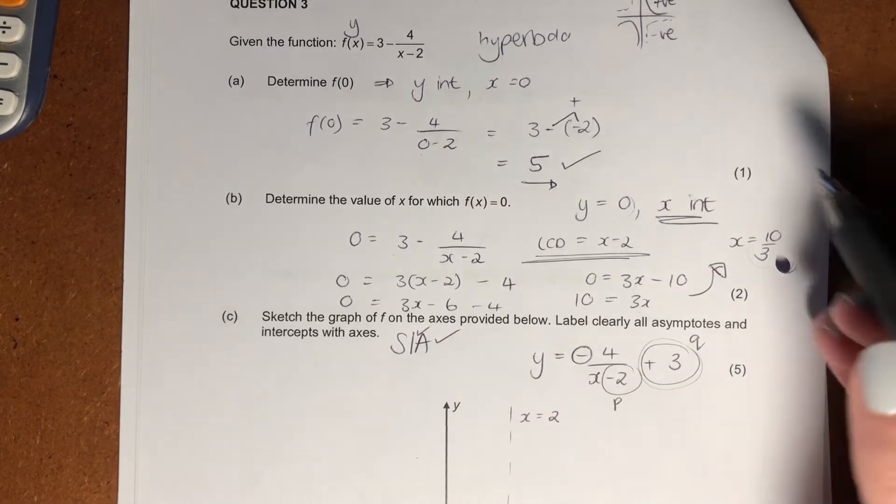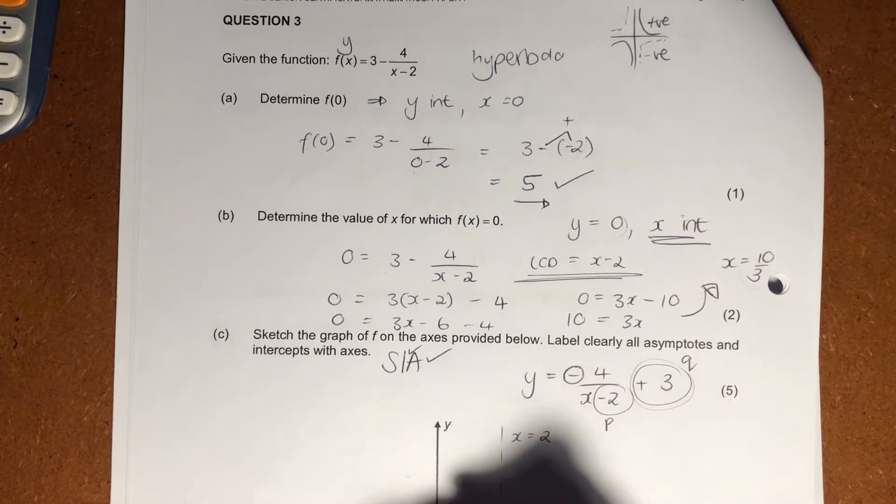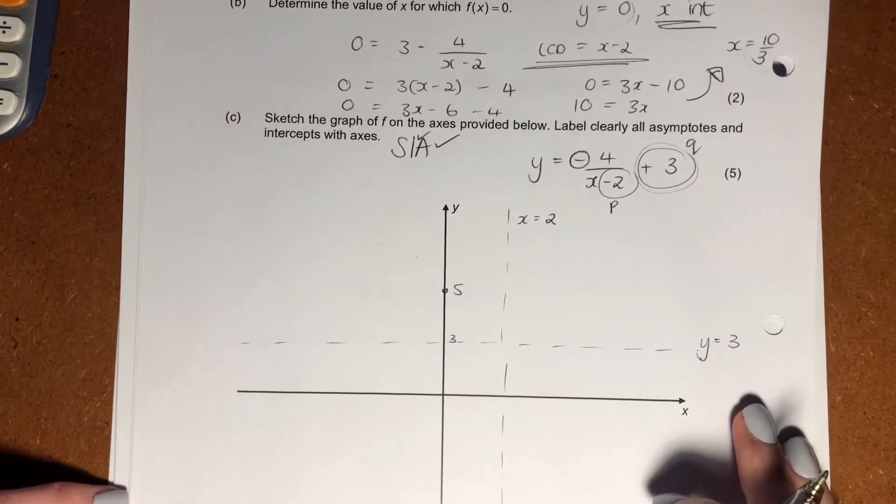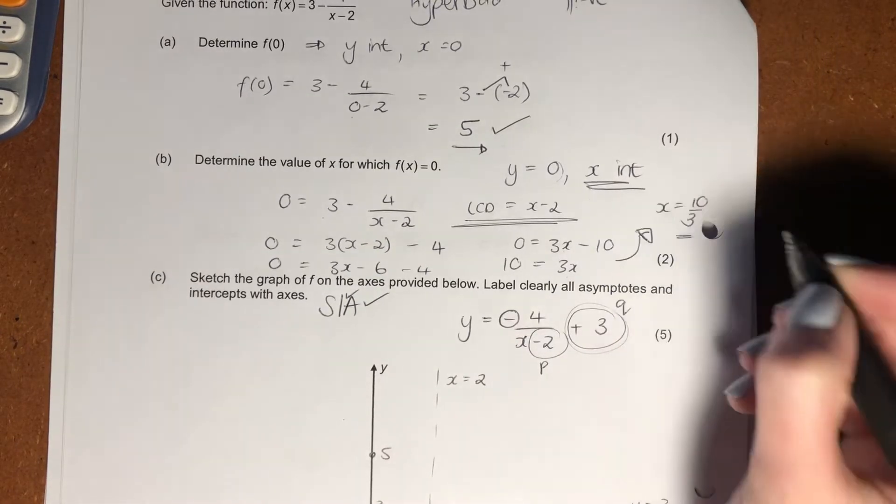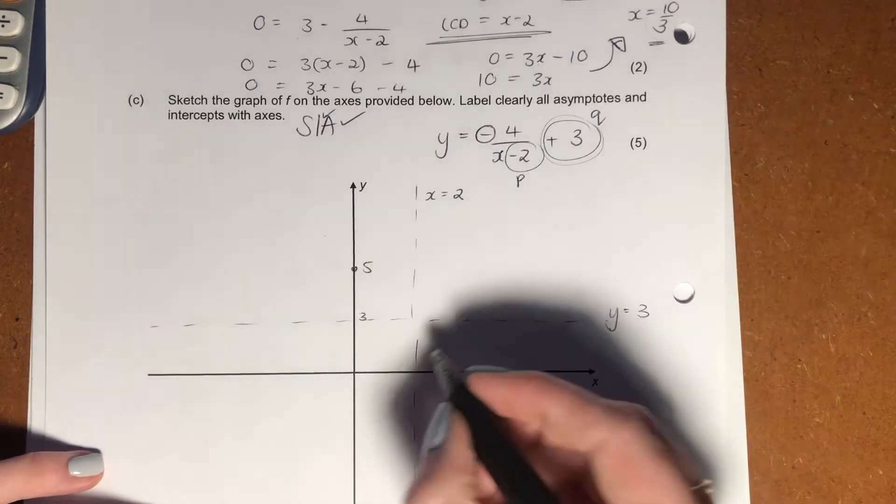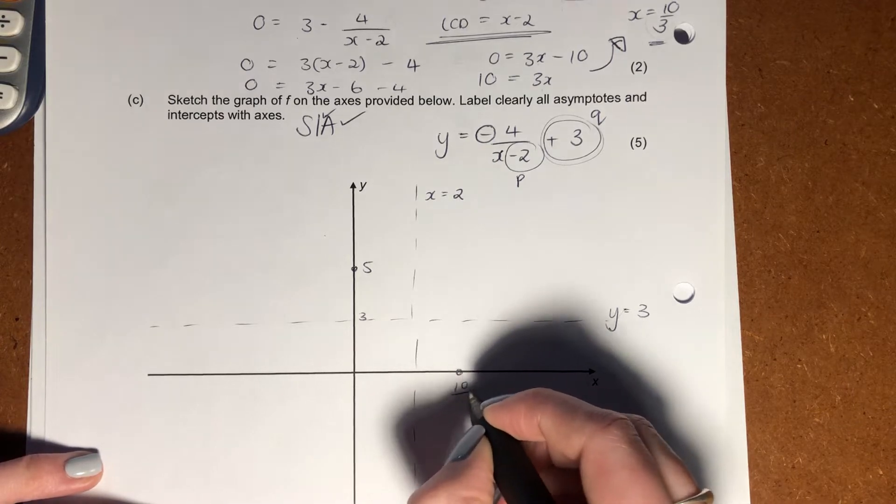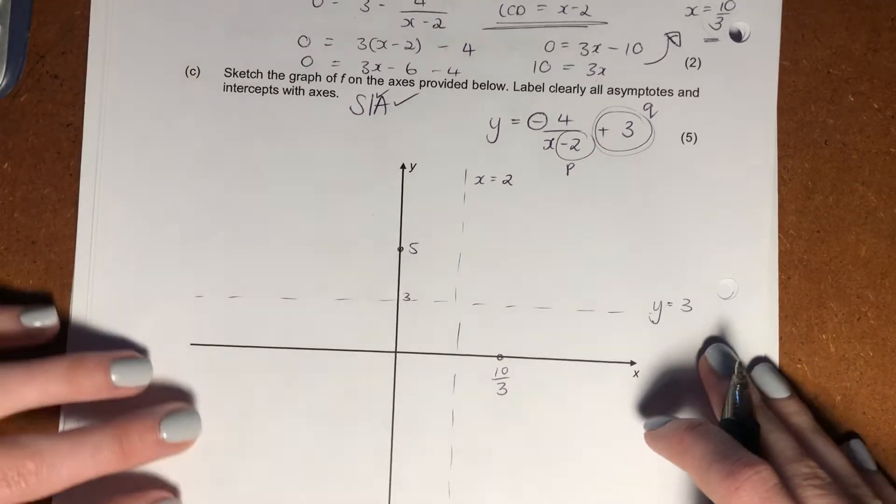Thankfully, we have our intercepts. Our y intercept is 5. So put that in over there. My x intercept is 10 over 3. So let's put that over here. It's going to be 10 over 3 is kind of over here somewhere. And we've put in our intercepts.